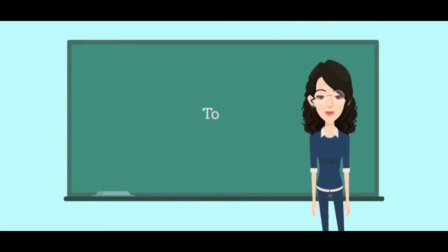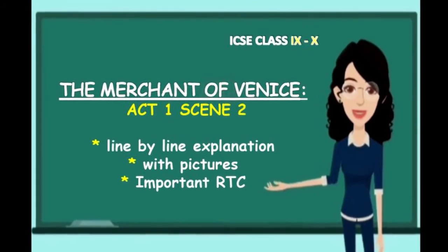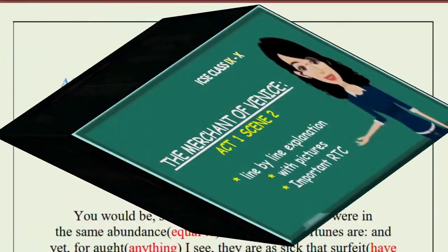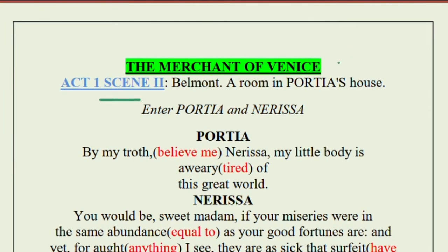Hello everybody, welcome to Word Shard. Today we are going to start with the second scene — Act 1, Scene 2 of The Merchant of Venice. It is for Classes 9 and 10. In the last scene we have seen that Antonio was a very wealthy merchant, talking to his best friend who wants to go to Portia, who lives in Belmont. We should know something more about Portia.